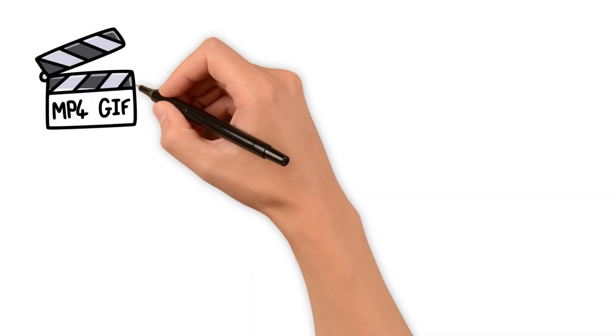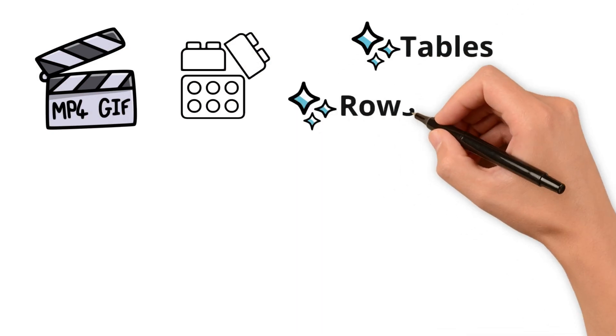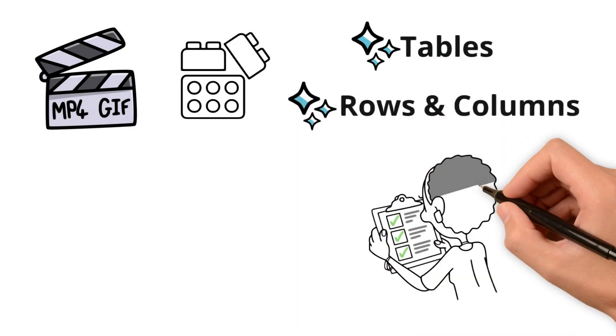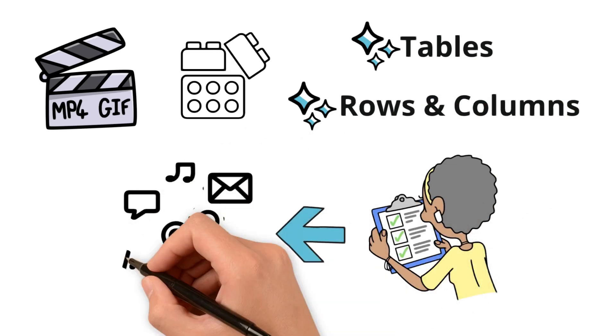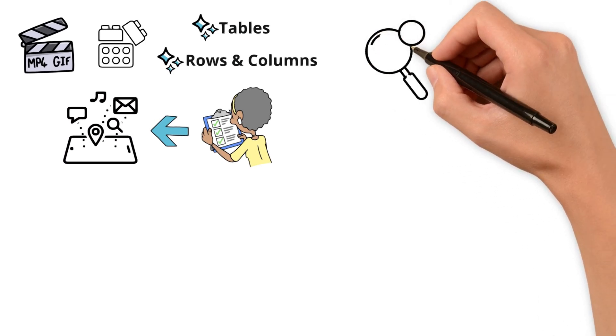In the previous video, we explored the building blocks of databases: tables, rows, and columns. These structures hold the valuable information that drives our applications and websites. But what happens when some of the information is missing?